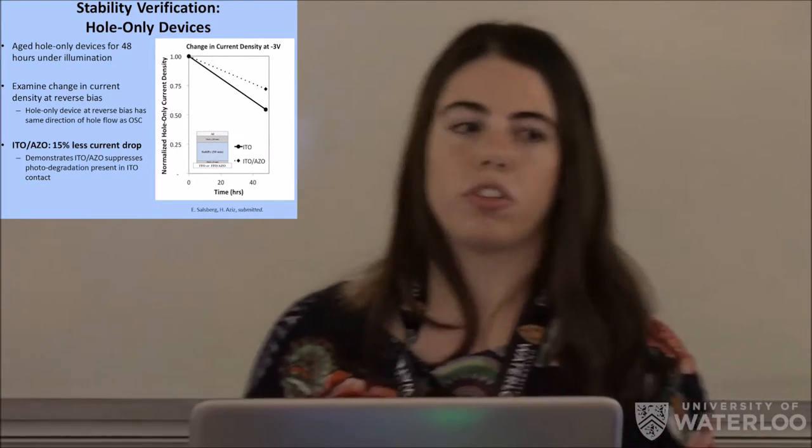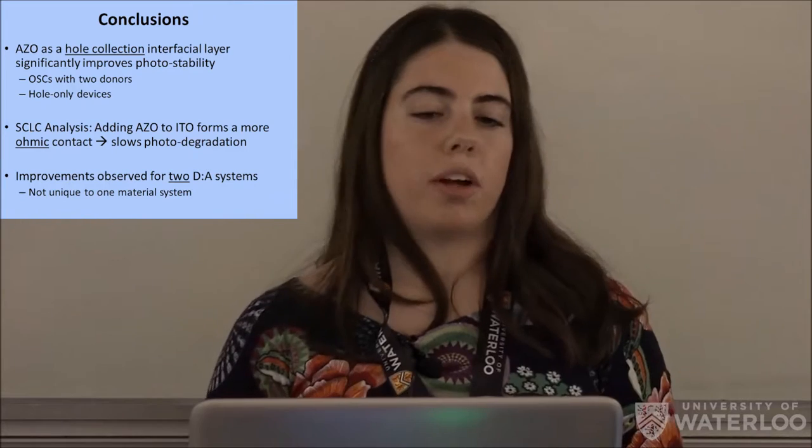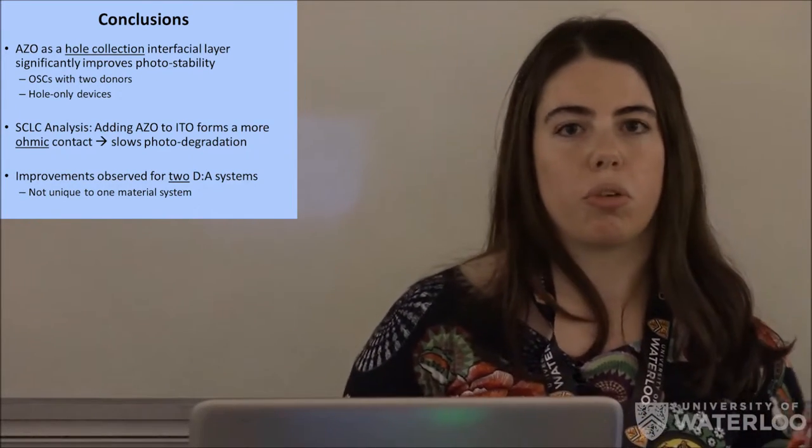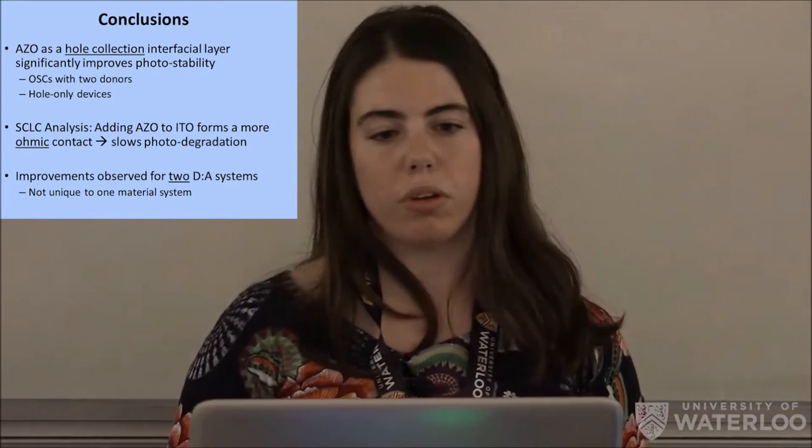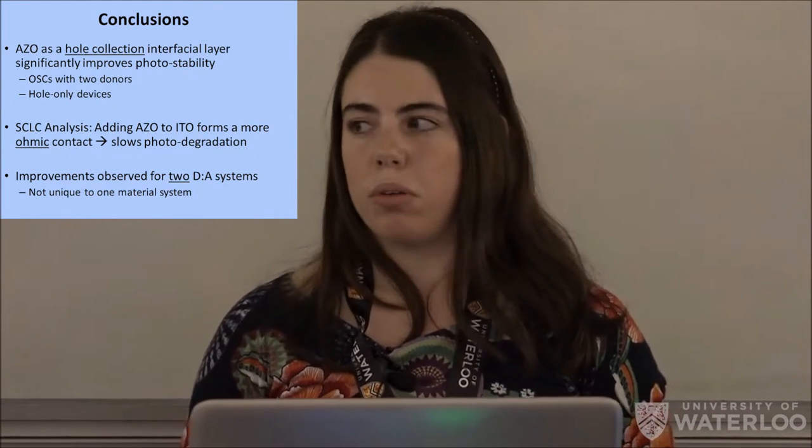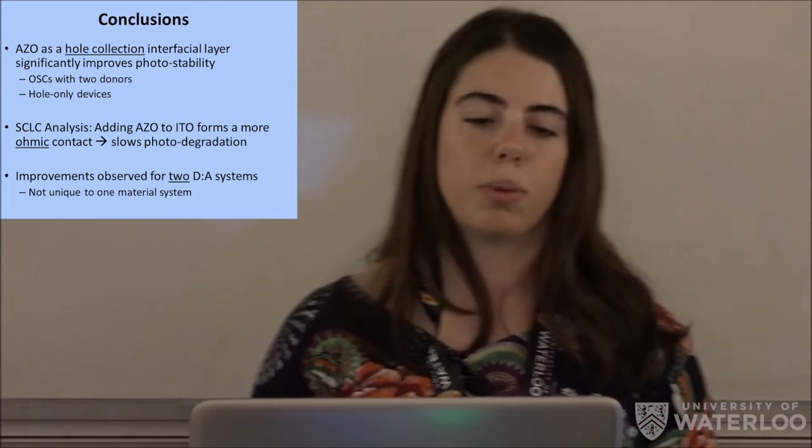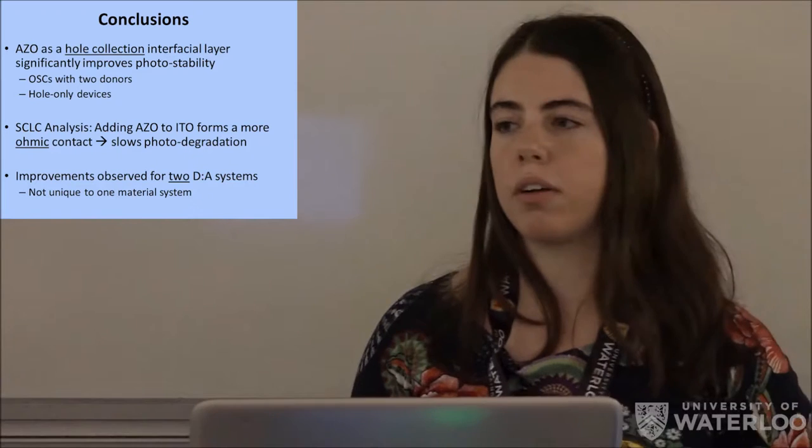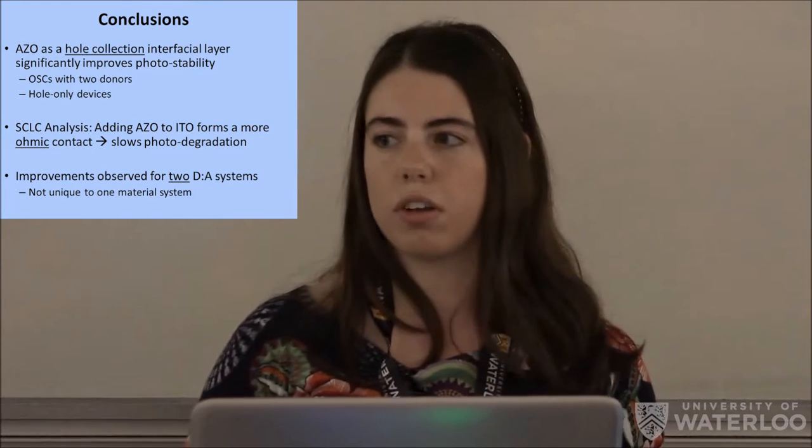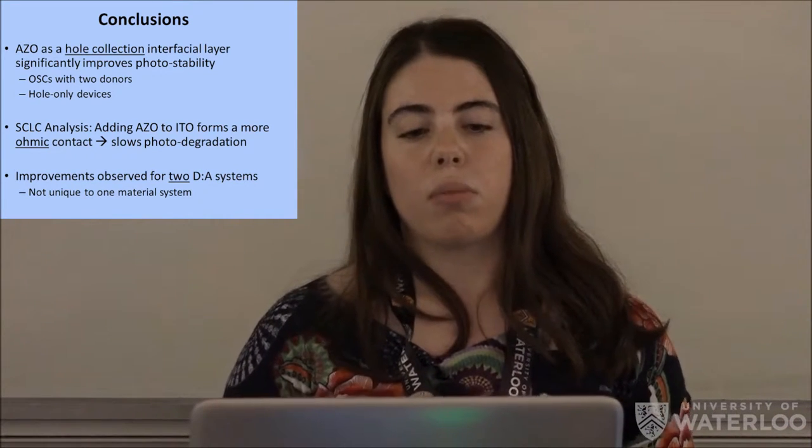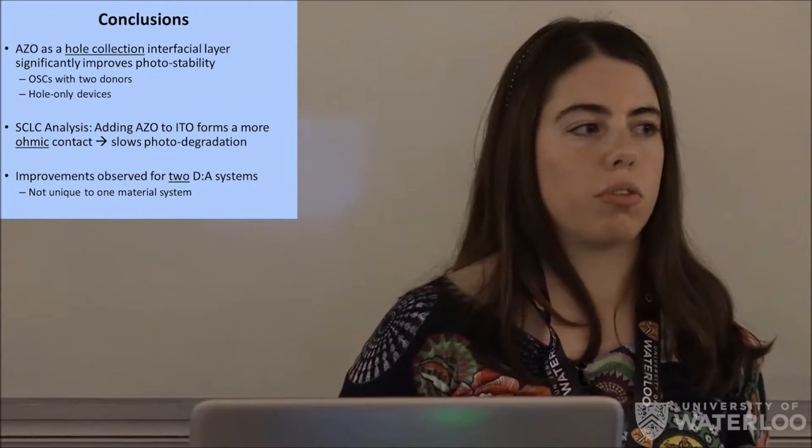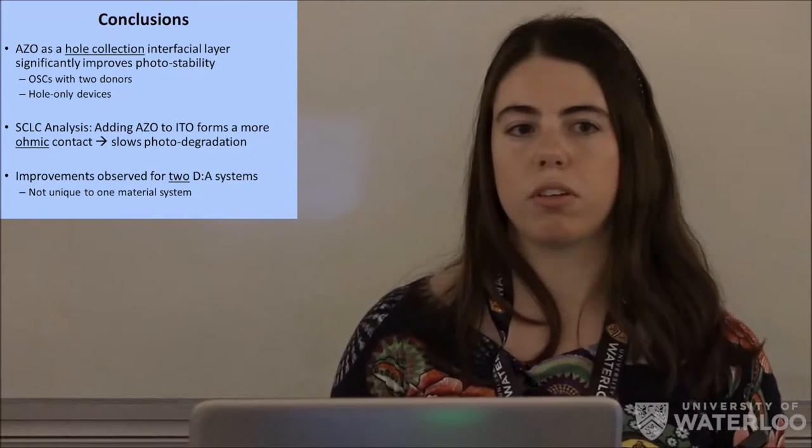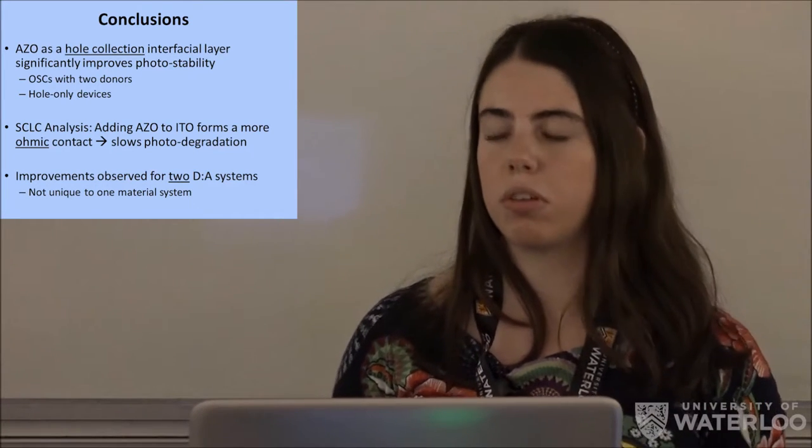So just to finish off with some conclusions, azo as a hole collection interface layer significantly improves photo stability. This was shown with organic solar cells with two different donors and with hole only devices. The space charge limited conduction analysis suggests that adding azo forms a more ohmic contact and therefore slows photo degradation. And these improvements were observed for two different donor acceptor systems, meaning that azo can potentially be used in many different organic solar cell material combinations.